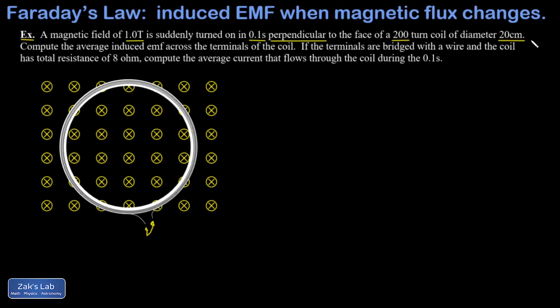I'm asked first to get the average induced EMF across the terminals. So again, current is not actually going to be able to flow here, but I'll still see an induced voltage across the terminals that's attempting to get the current flowing in the direction that opposes the change in flux. And then I said in the second part, if the terminals are joined by the wire and the coil has a total resistance of 8 ohms, give me the average current that would flow through the coil.